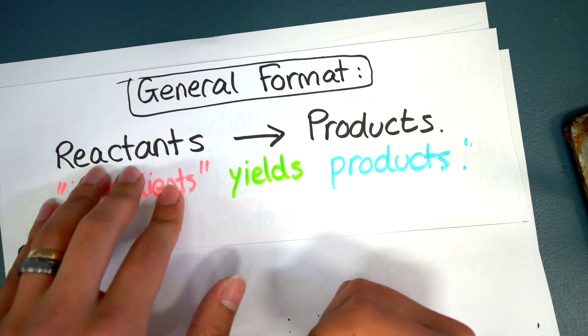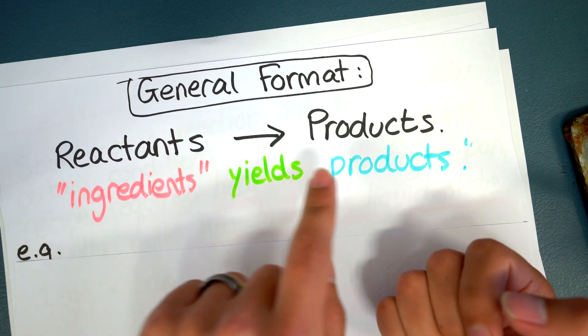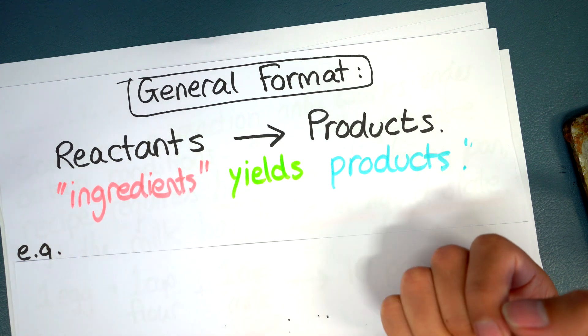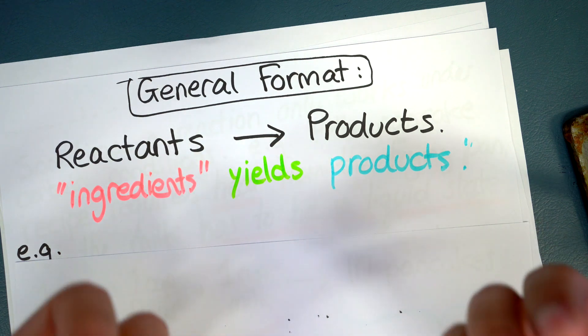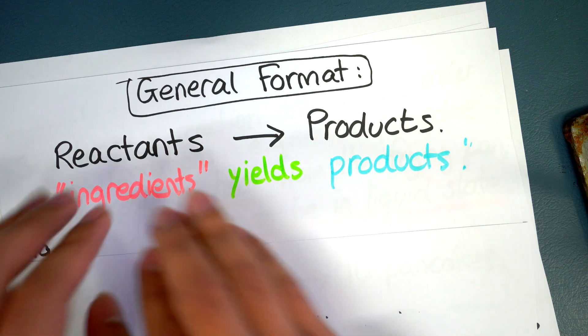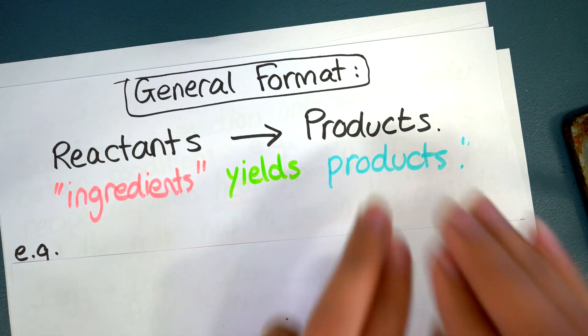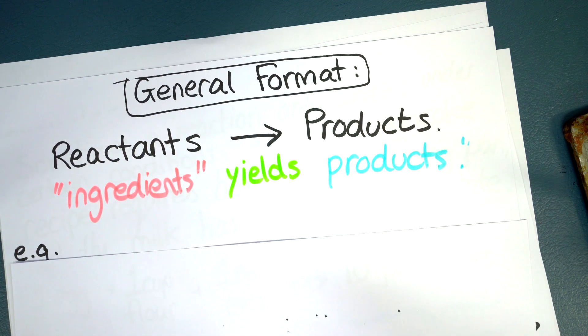So these materials here on the left are actually changing into the materials on the right. So that's what the arrow sign indicates. So another way of putting it is that the arrow sign is you could say this yields these products here. Not equivalent.